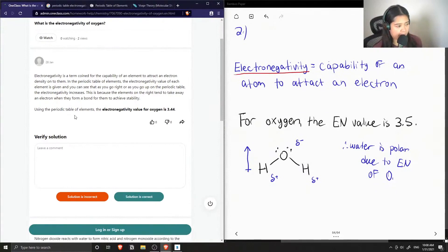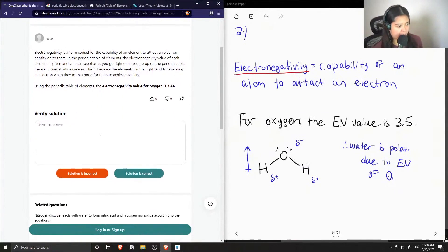This is because the elements on the right tend to take away an electron when they form a bond for them to achieve stability. Using the periodic table of elements, the electronegativity value for oxygen is around 3.44.